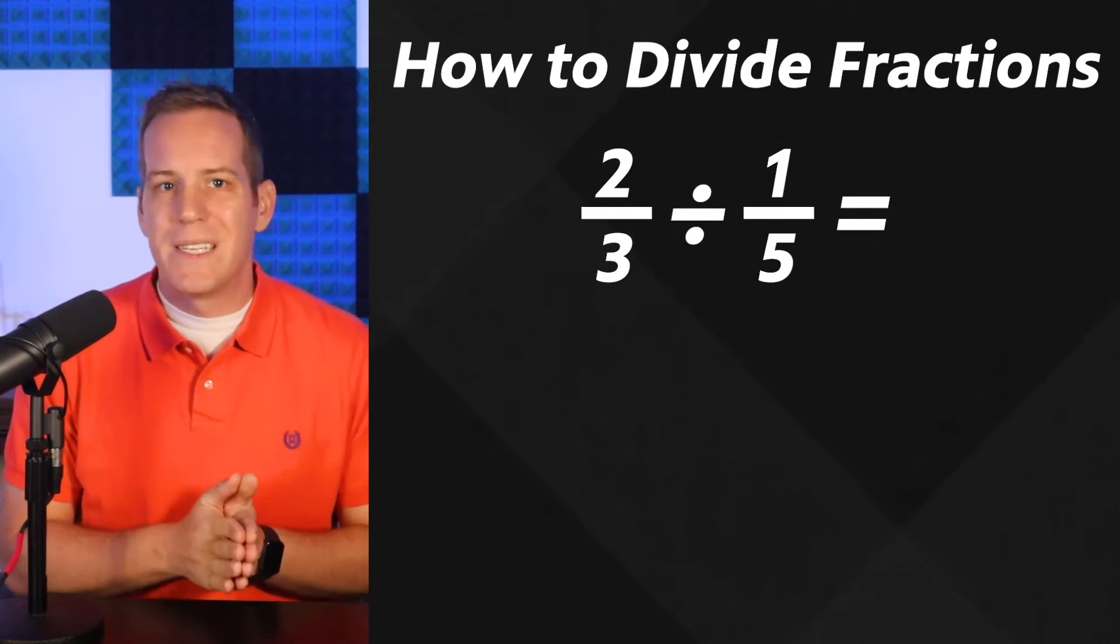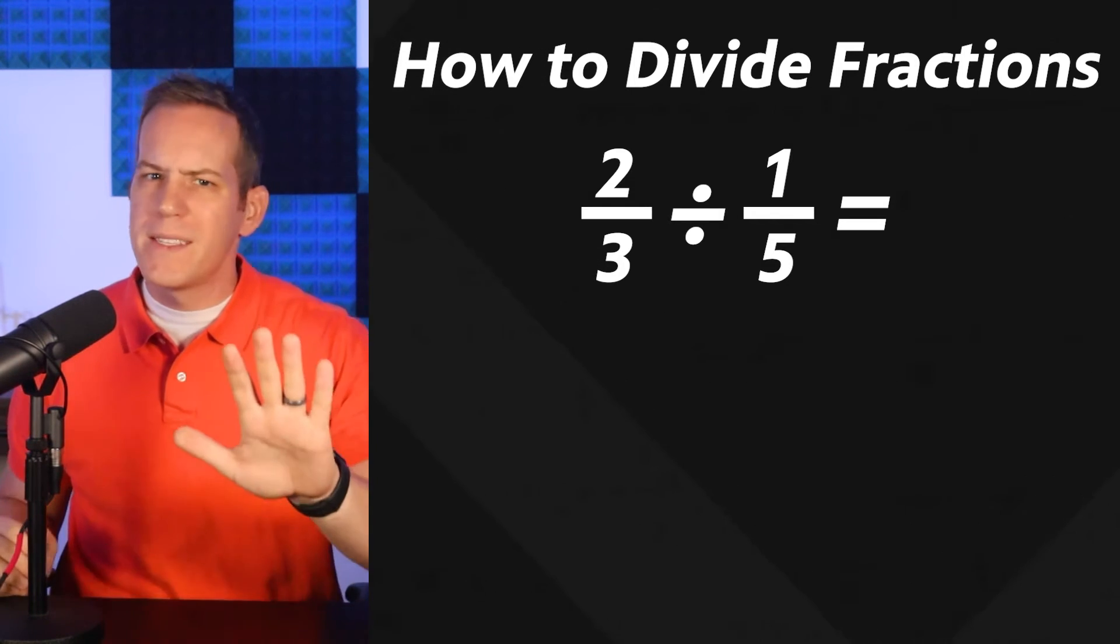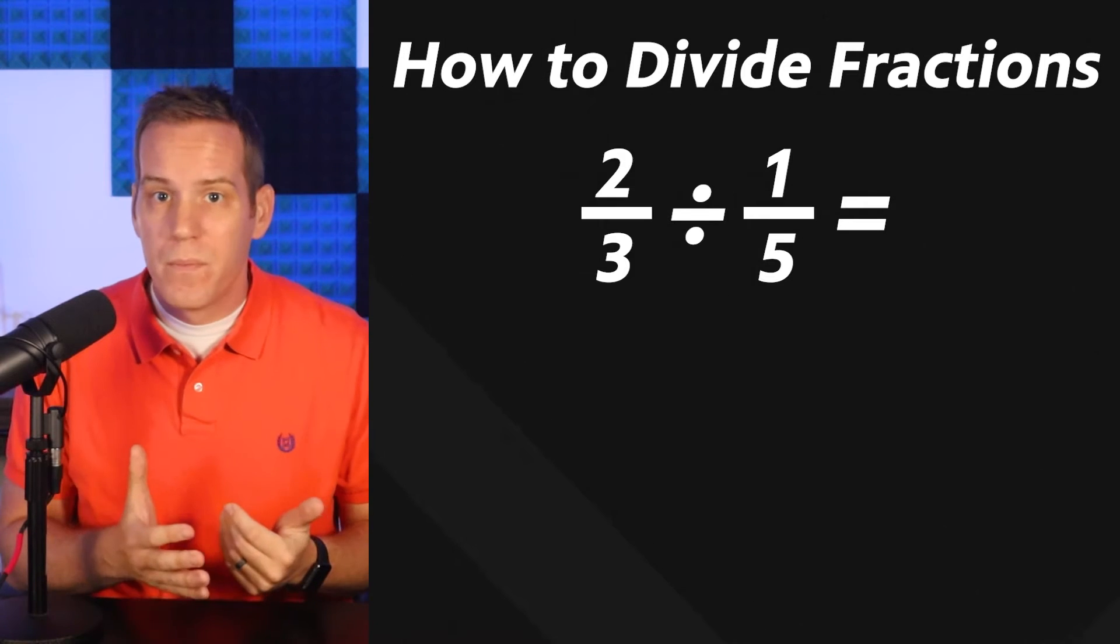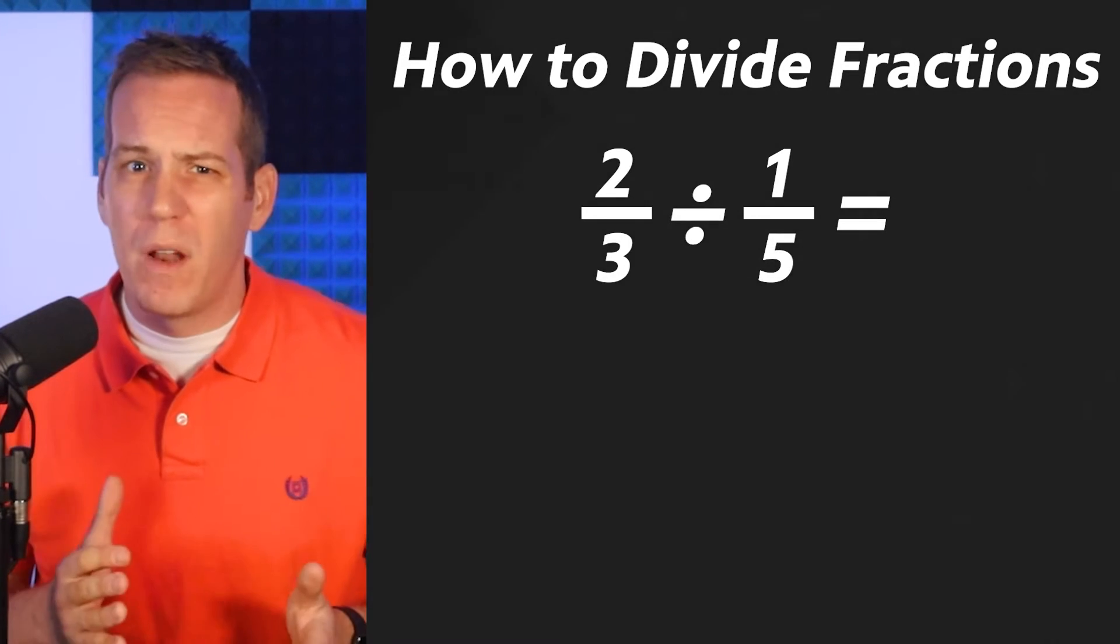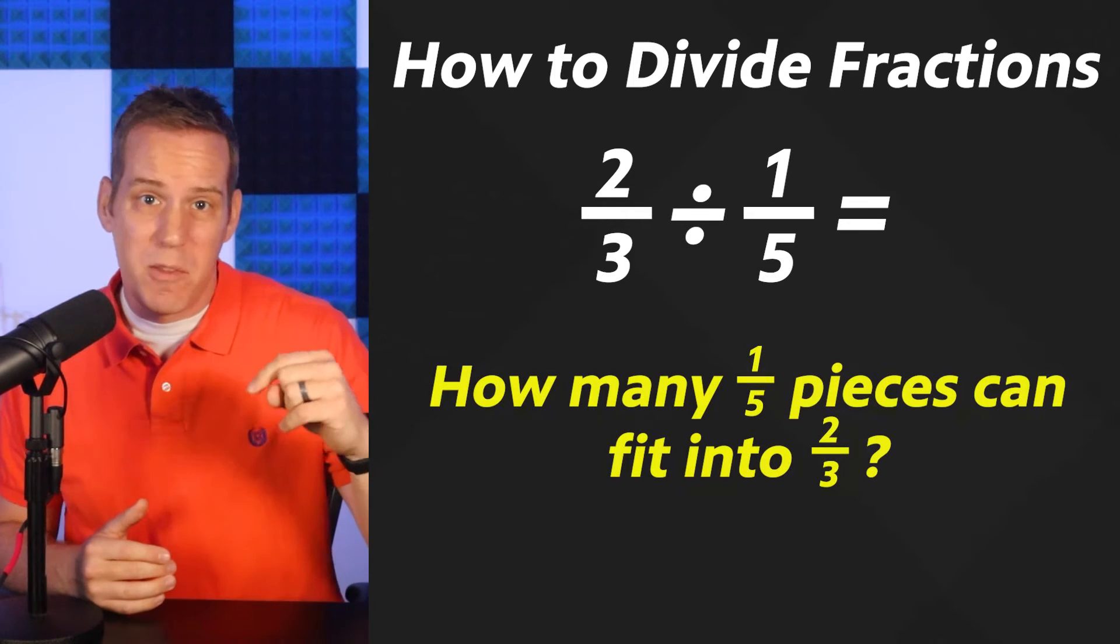Here's our problem: two-thirds divided by one-fifth. But before we get going too far, let's take a step back and find out what we're actually trying to do. What does two-thirds divided by one-fifth mean? It means how many one-fifth pieces can fit into two-thirds.